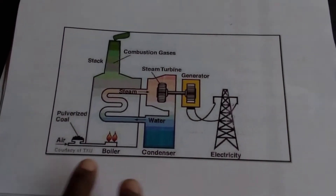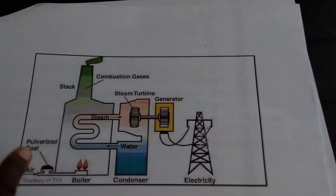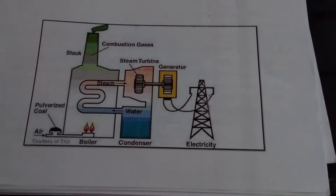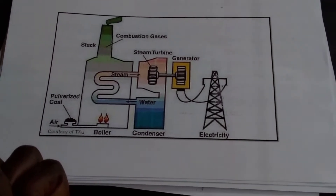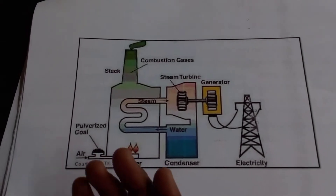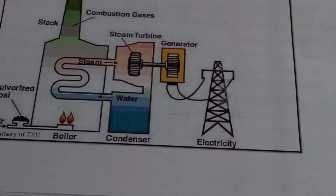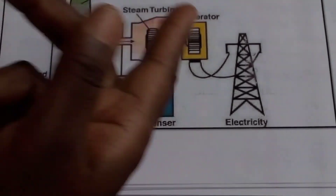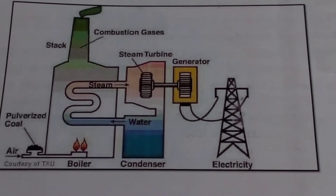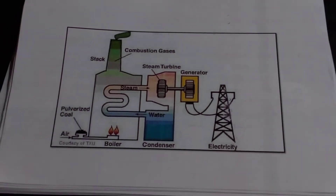What I was explaining about the generation of electricity is highlighted by this diagram. We have the pulverized coal — pulverized coal is coal that is crushed — and it is the one that boils the water within the boiler. As the water boils, the steam gets into the turbines and generates electricity. For South Africa it is very cheap to use electricity from coal because coal is in abundance.